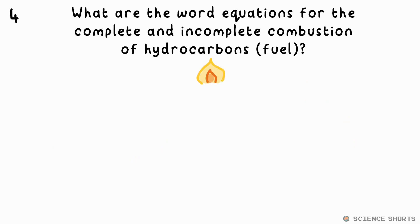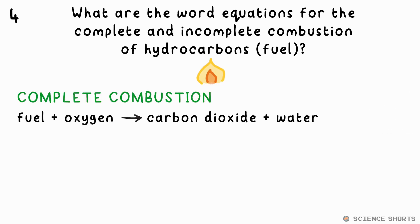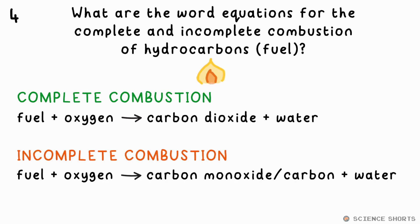What are the general word equations for complete and incomplete combustion of hydrocarbons? Complete combustion happens when there's plenty of oxygen available — the hydrocarbon, or any fuel, reacts with oxygen to make water and carbon dioxide. Incomplete combustion occurs when there's less oxygen available; in this case it's not carbon dioxide that's made, but carbon monoxide, which is poisonous, or even just carbon — that's soot.